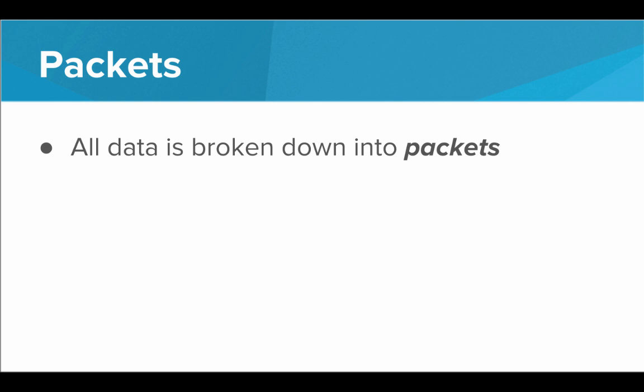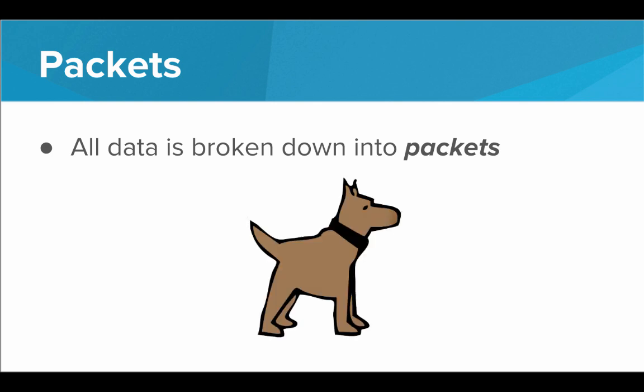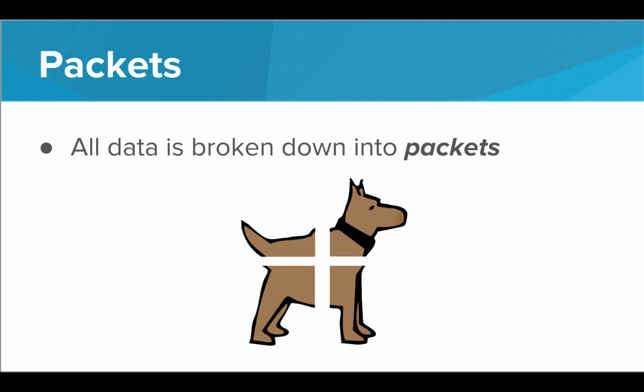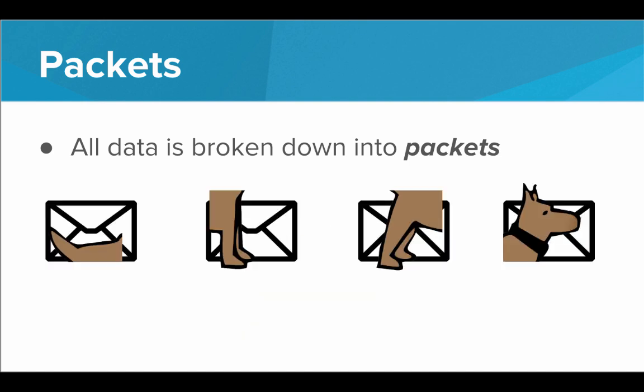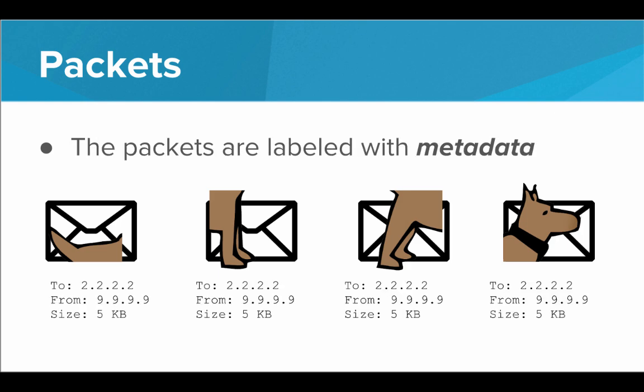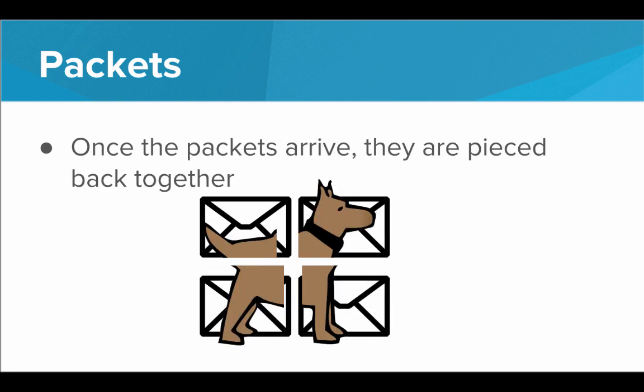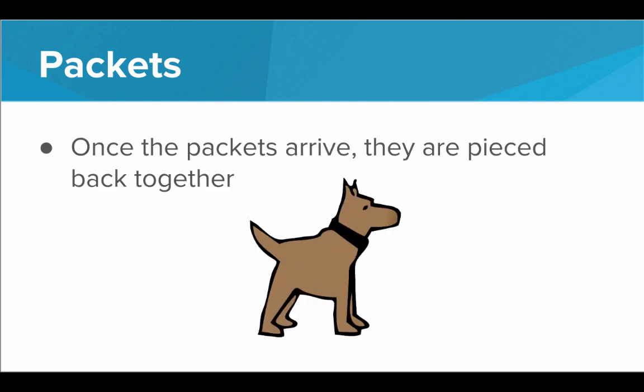Once it arrives at the destination, the house would be reconstructed from these pieces. This is exactly how the internet works. If we wanted to send a picture of Carol across the internet, that picture would actually get broken down into several different pieces. Each of those pieces would get put inside its own packet, and then those packets would be sent across the network, routed through the internet. These packets need to be labeled with metadata in order for the routing to work — things like the from address, the to address, how big it is. Just like you would mail something through the postal service, you need a from address and a to address. So once these packets arrive at their final destination, they are pieced back together, and then we have our picture of Carol.